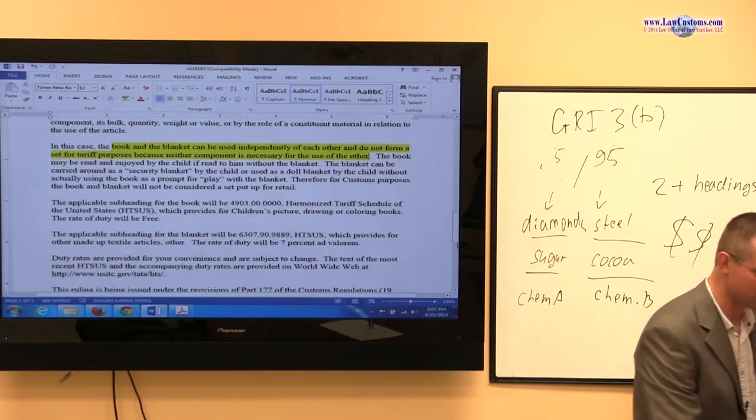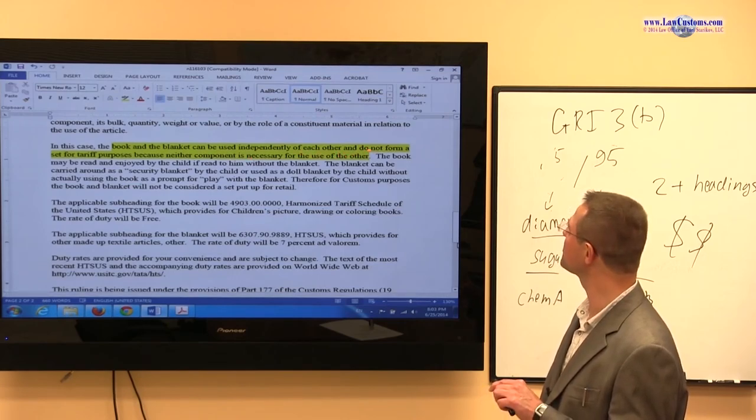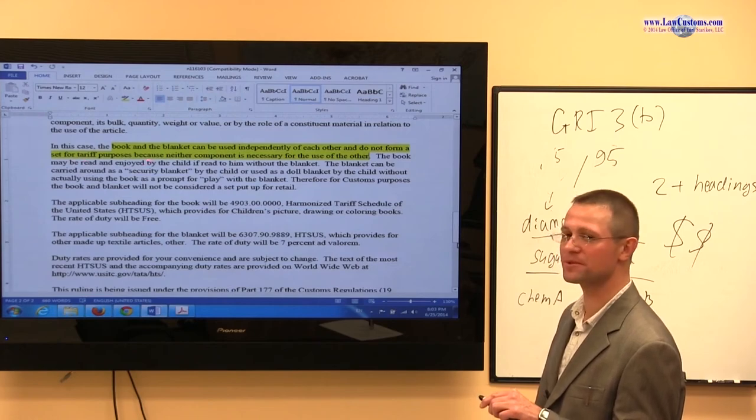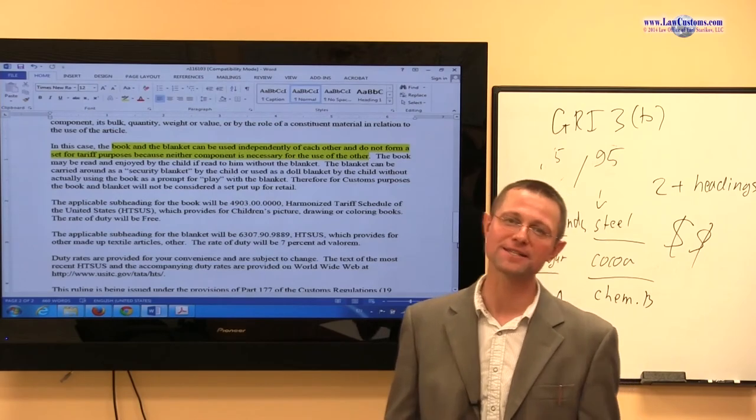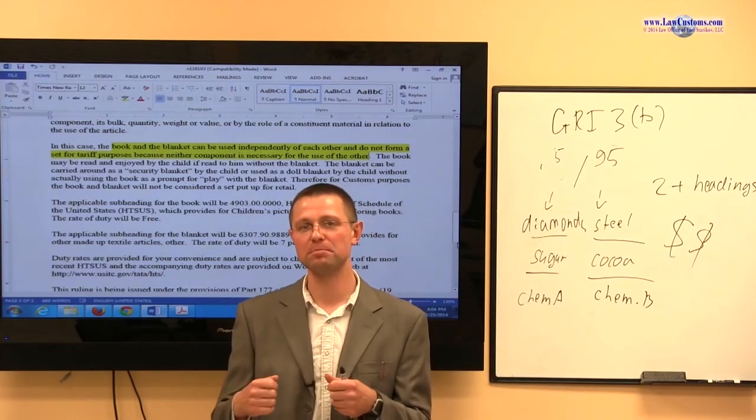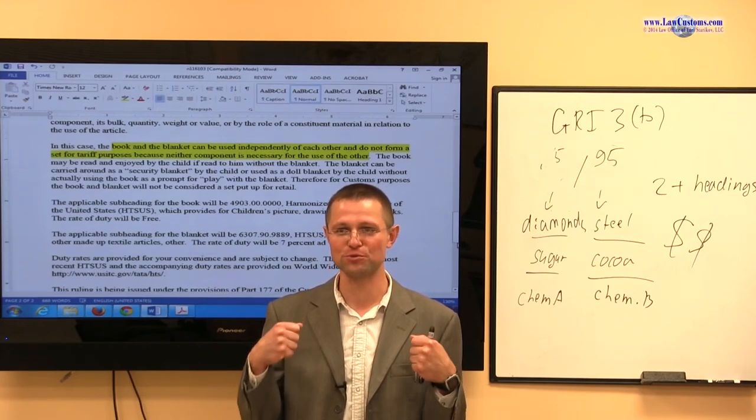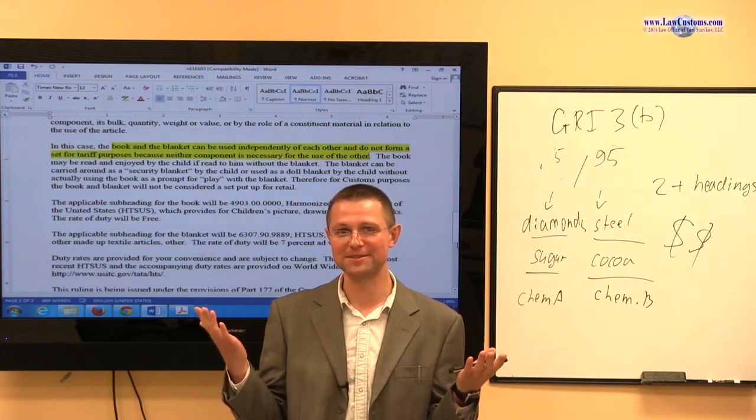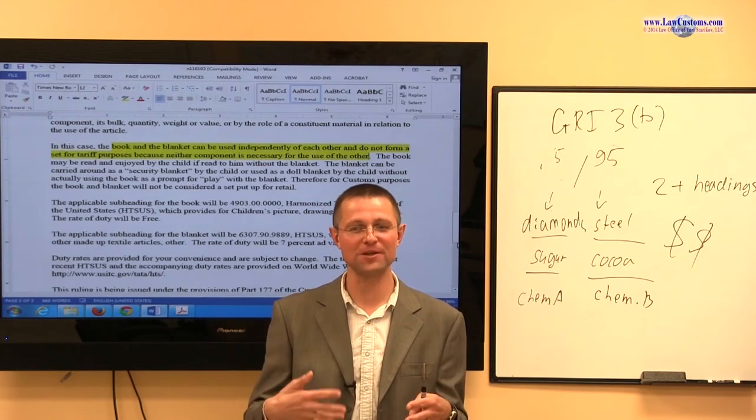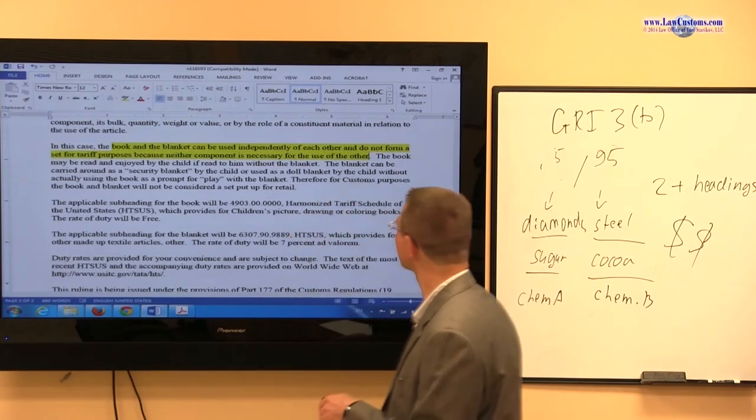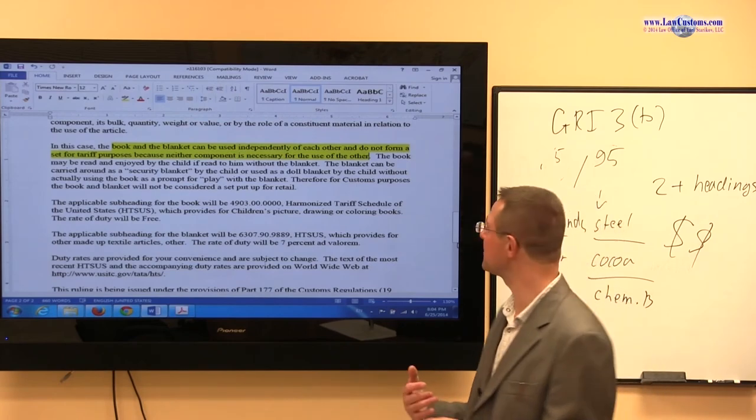And here is what they conclude. In this case, the book and the blanket can be used independently of each other and do not form a set for tariff purposes. So even though they are called a set, you saw a book and a blanket together. But on the customs side, the question is, do you classify it as a set? If they are used independently of each other...